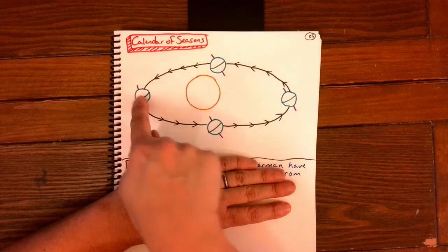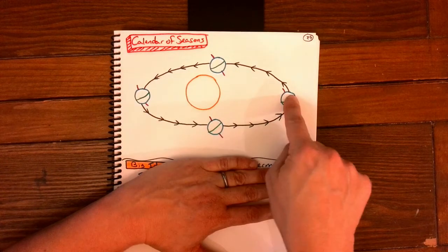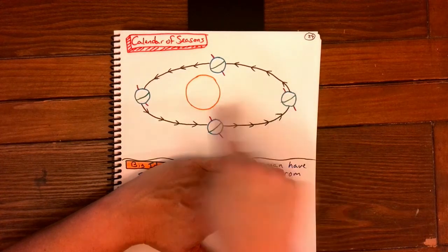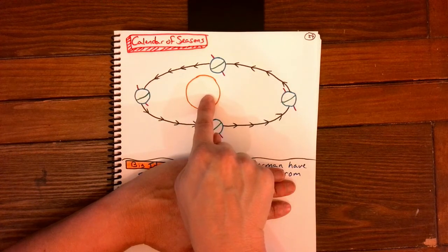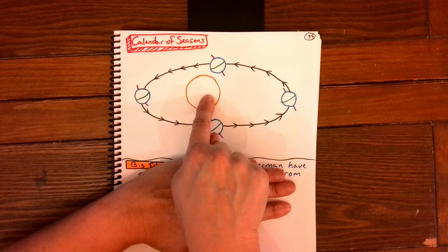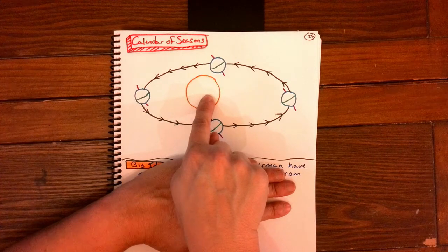And then we have Earth at four points on its orbit. This one, that one, that one, and that one. Please notice that the Sun is off center. Because remember, the Sun is not right in the middle of Earth's orbit. It is off to one side.